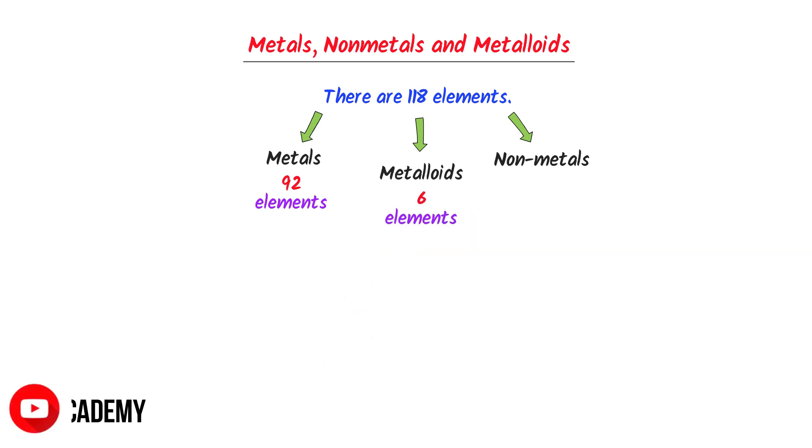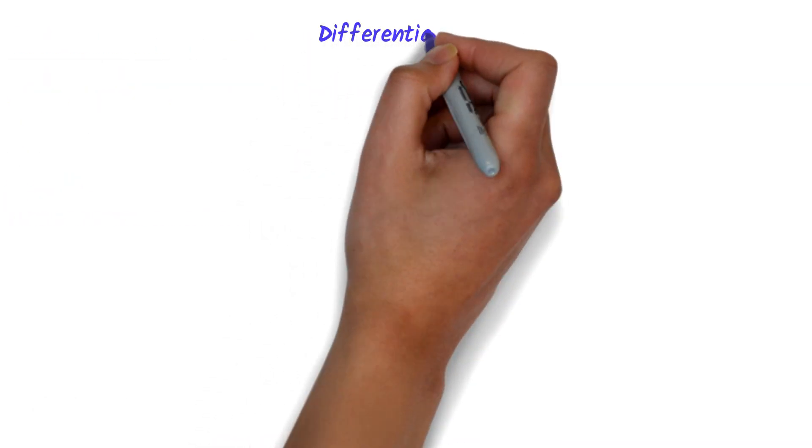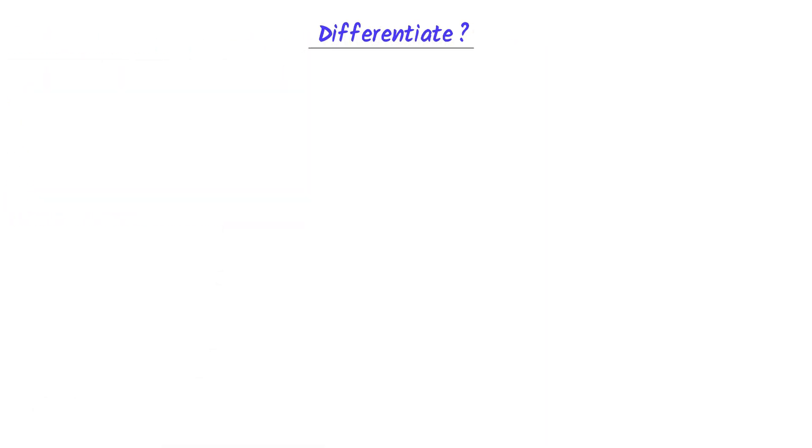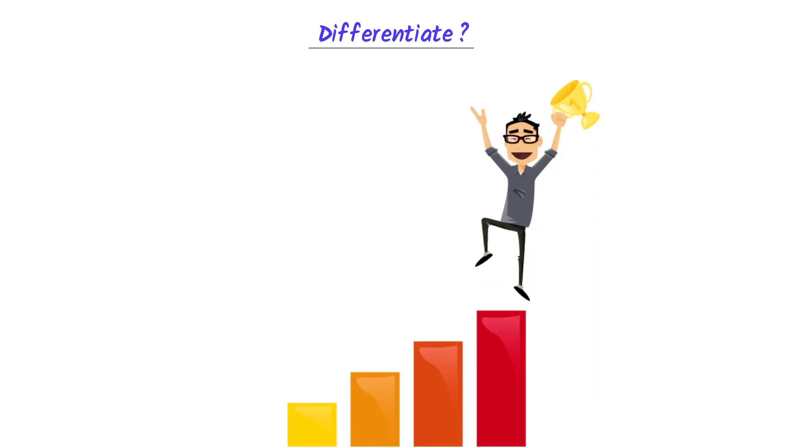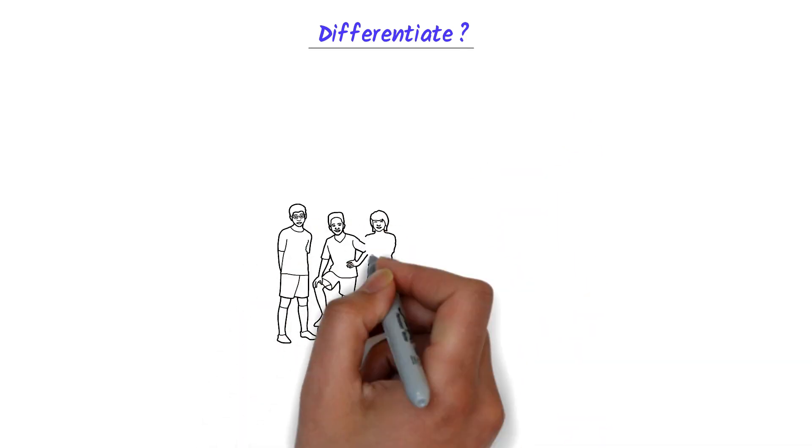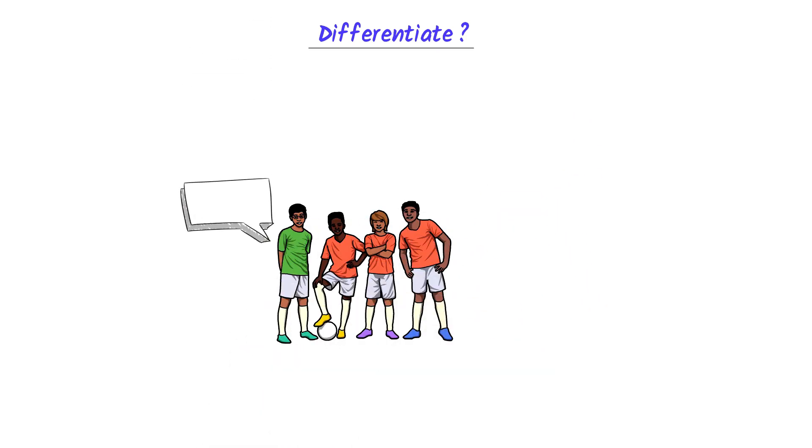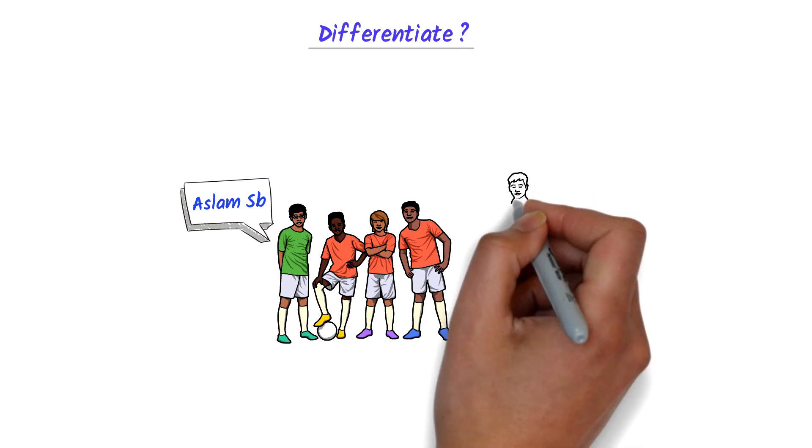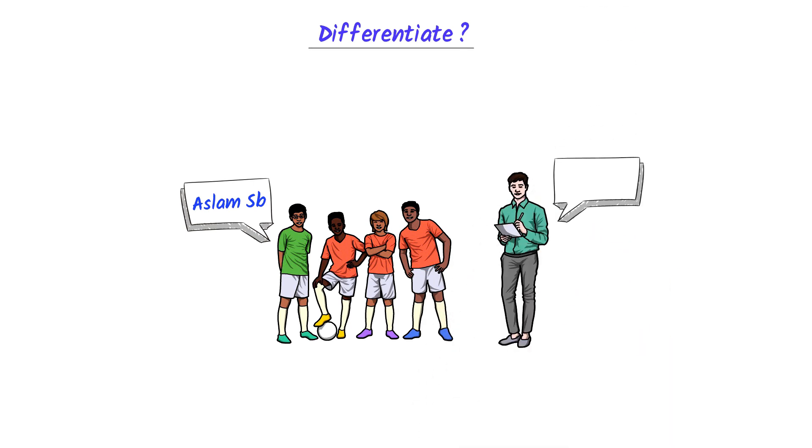Now how can we differentiate among metals, nonmetals and metalloids in the periodic table? Well, I always teach my personal trick. Consider a football team of your class. Aslam Saab is the captain of this team. Now every year, Bayu Sir picks Aslam Saab's team.